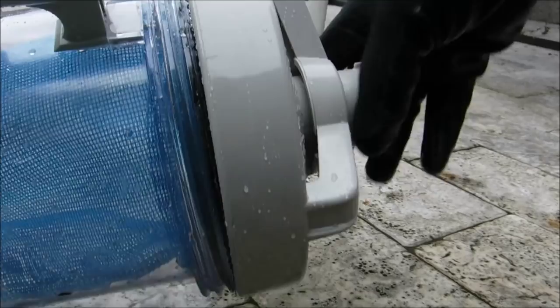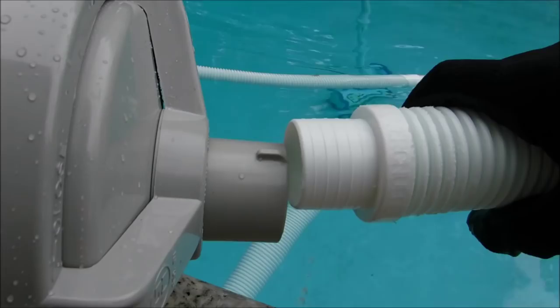The canister itself is really easy to attach to your cleaner. Take the cleaner hose coming from the cleaner itself, you slide it into the front of the canister like this. You want to submerge the canister and get all the air out.